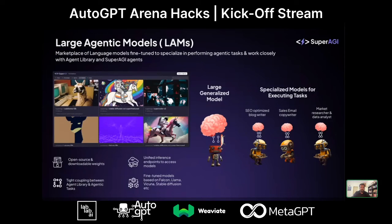We're also very excited about what we're launching in the next couple of weeks: large agentic models. One key challenge with large generalized models working with agents is that it's like trying to fit a very generalized intelligence into a specific agent use case — and that doesn't always work. So we're building very sophisticated, focused models depending on the use case, fine-tuned on top of open-source models and paired with an agent template to solve that specific use case. We'll be talking more about that on Twitter and our community Discord.